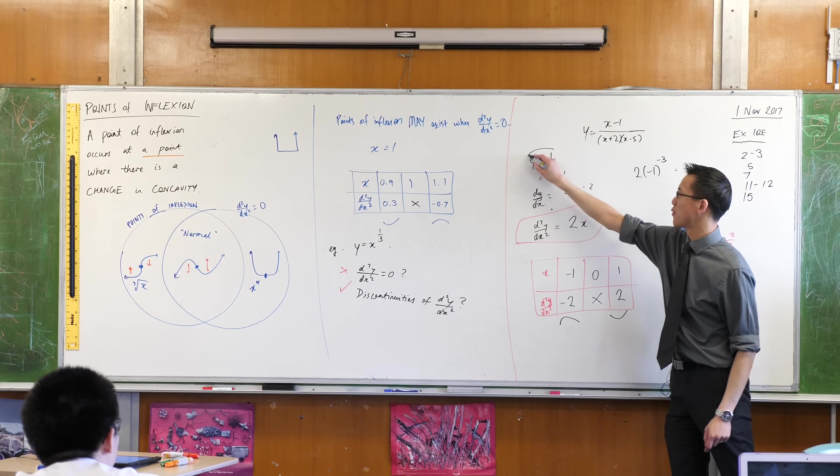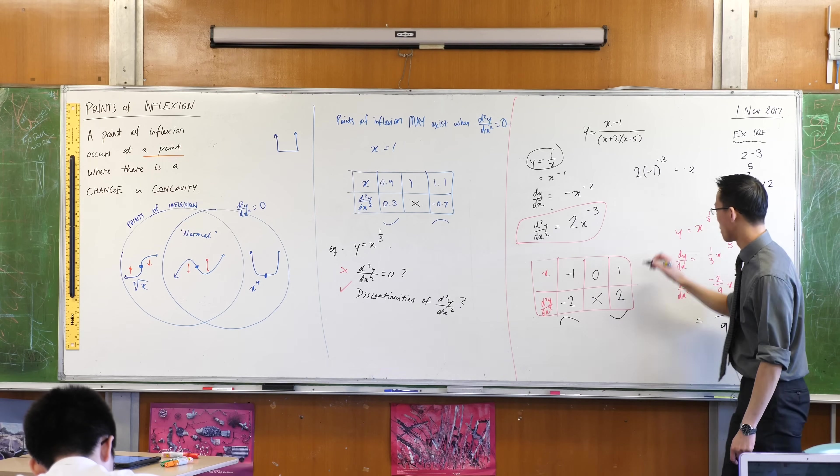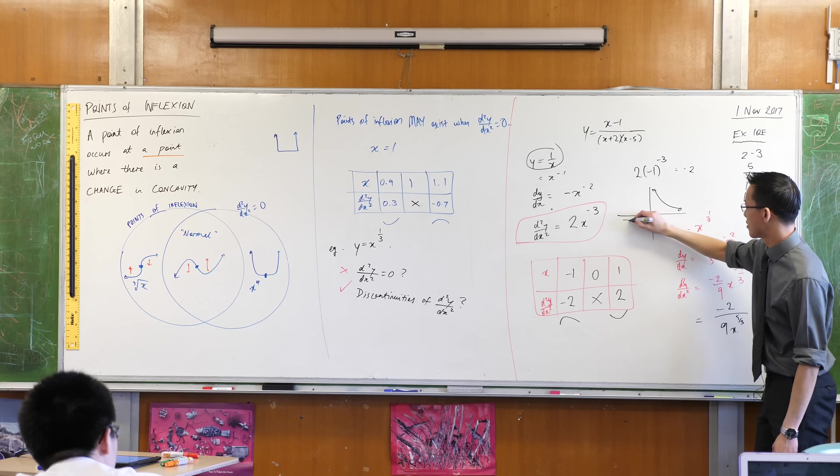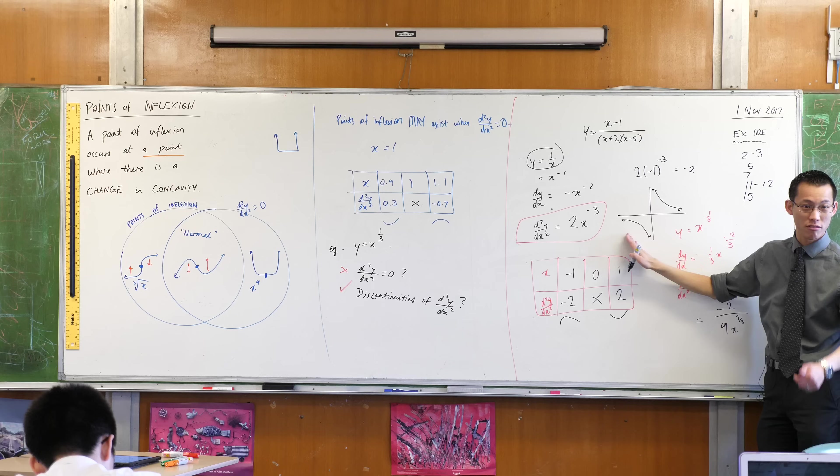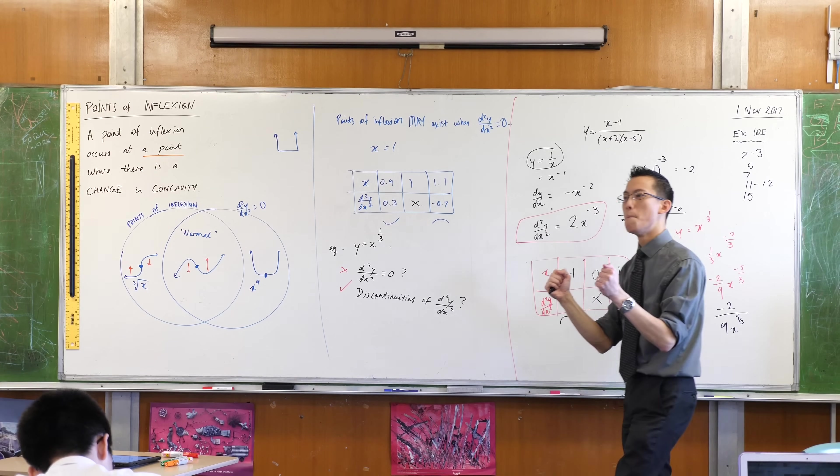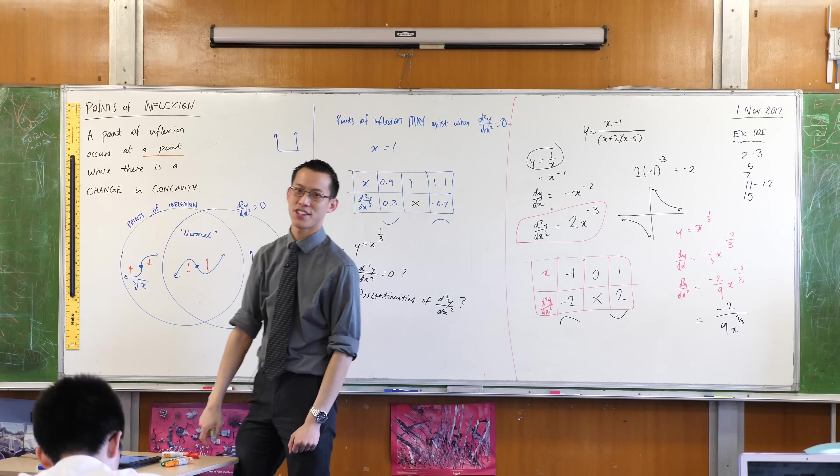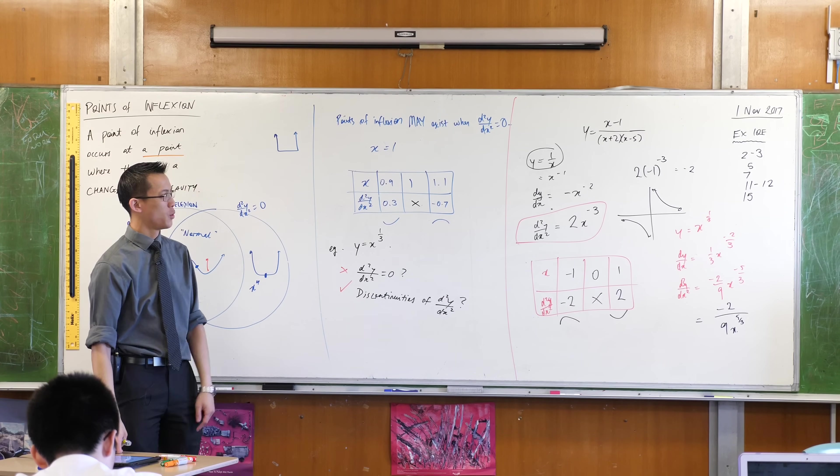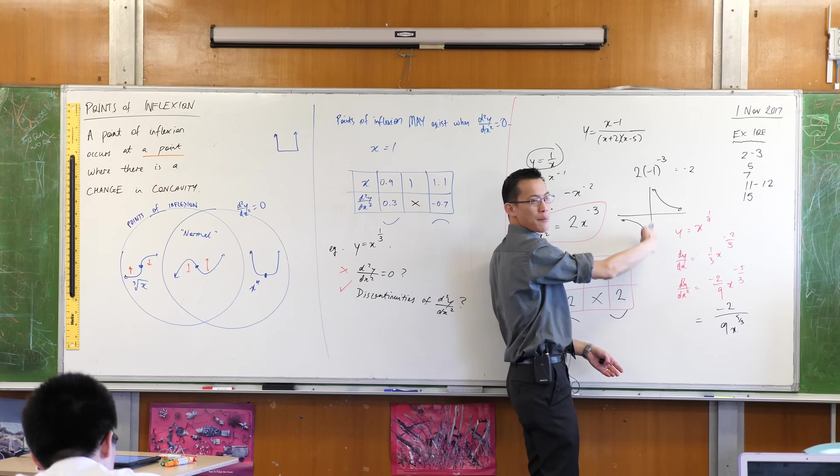Remember we said before we know what this graph looks like. We know what it looks like. Concave down, yes. Concave up, yes. Is there a point of inflection? And the answer is, well, there's no point to begin with. Where am I? So the hyperbola has no point of inflection, even though there's a change in concavity.